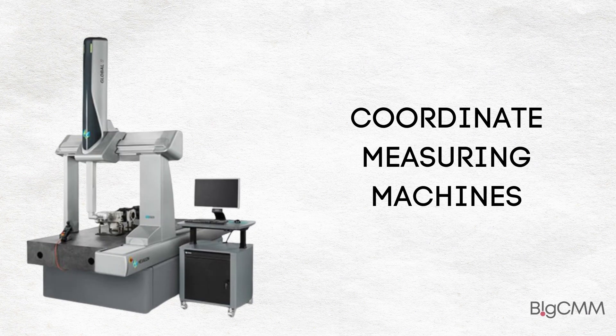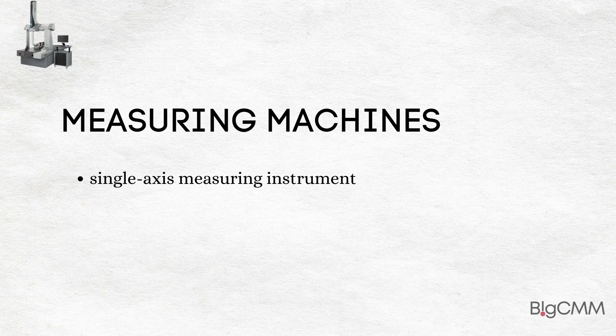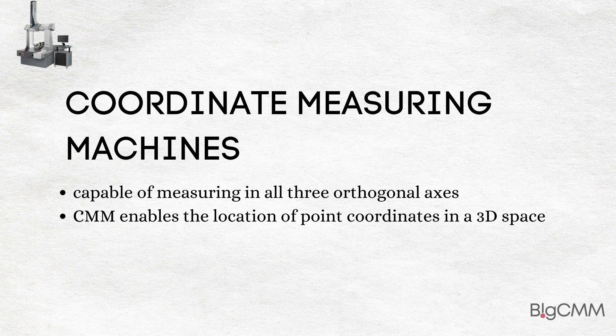The term measuring machine generally refers to a single axis measuring instrument capable of measuring one linear dimension at a time. The term coordinate measuring machine refers to an instrument capable of measuring in all three orthogonal axes. Such a machine is popularly abbreviated as CMM. A CMM enables the location of point coordinates in a three-dimensional 3D space.